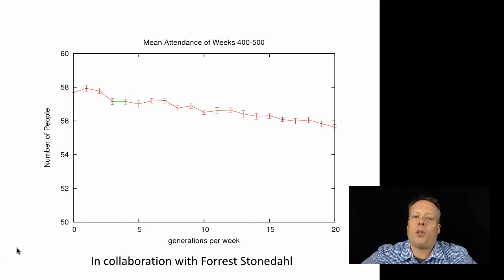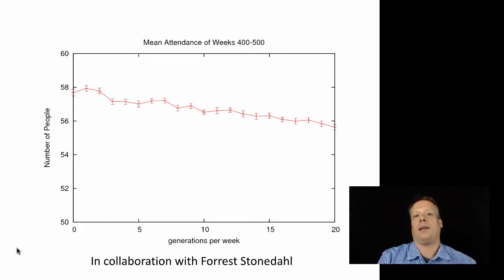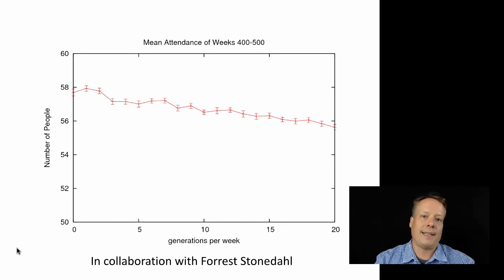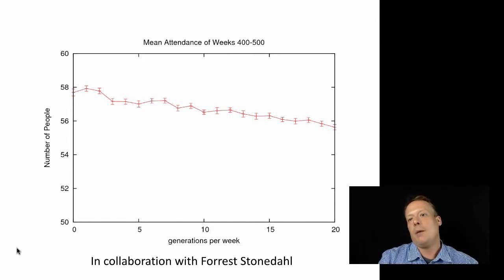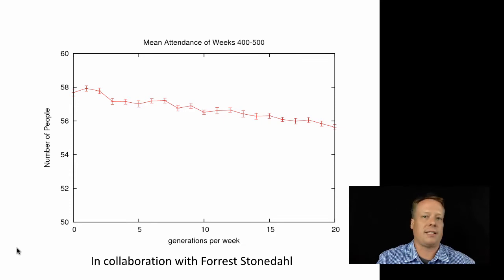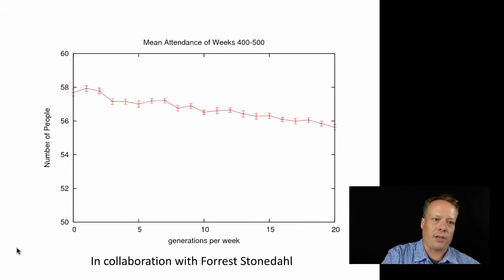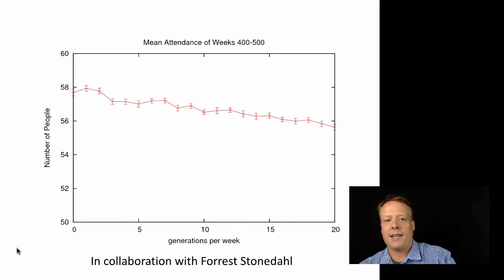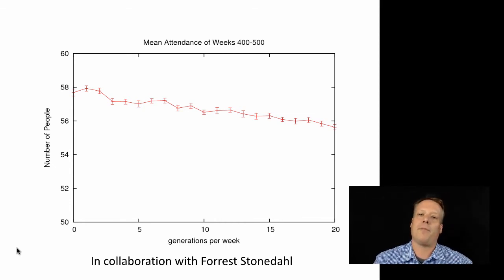This is one example of how you might combine agent-based modeling and machine learning, where we put a genetic algorithm into each agent to help them make decisions. It's also an example of truly adaptive agents: agents in this context make different decisions based on their past experiences, so even when presented with the same current situation, they might use a different strategy and change the way they solve the problem.